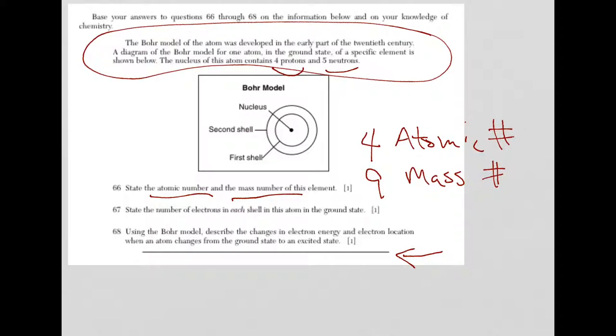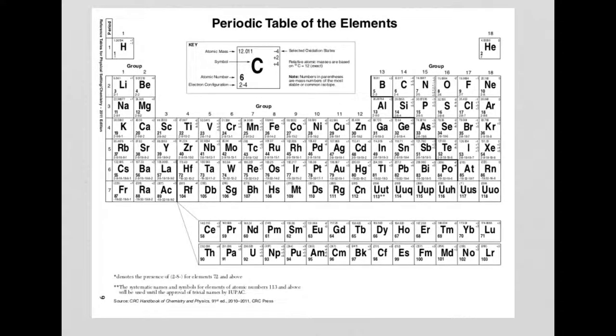Let's take a look at 67. State the number of electrons in each shell in this atom in the ground state. Okay, so because its atomic number is number four, you know the identity of the element. Just look at the periodic table. Element four is beryllium.